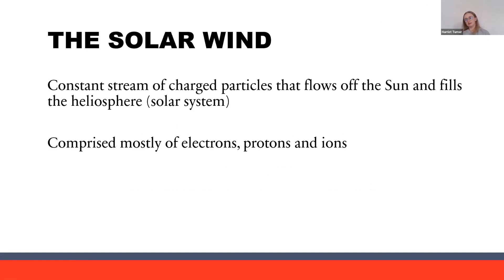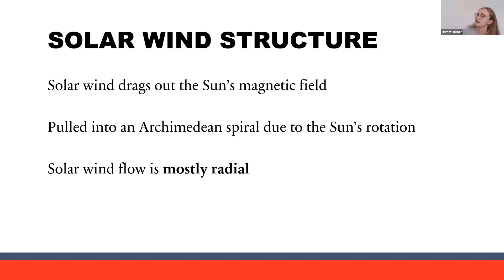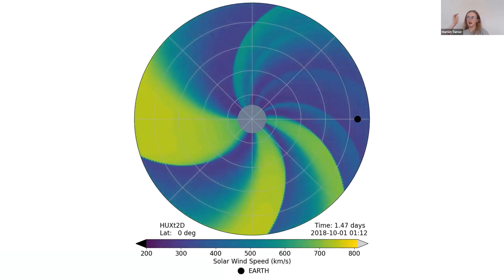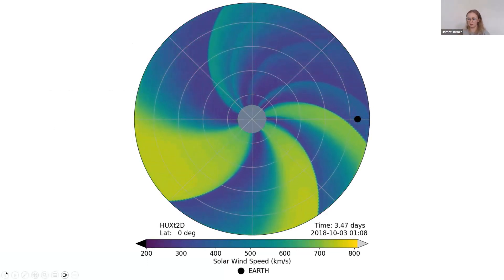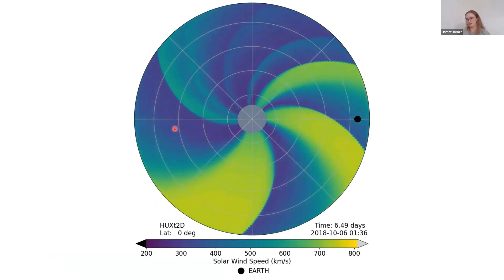So what is the solar wind? It is a constant stream of charged particles that flows off the sun and fills the heliosphere, or solar system. It is comprised mostly of electrons, protons, and ions, and rather dramatically looks like this — although this is both not to scale and an artist's impression. The solar wind drags out the sun's magnetic field, and due to the rotation of the sun it is pulled into an Archimedean spiral, although the solar wind flow is mostly radial, as shown by this animation. It's mostly bimodal — streams of fast solar wind shown in yellow and streams of slower solar wind in blue.